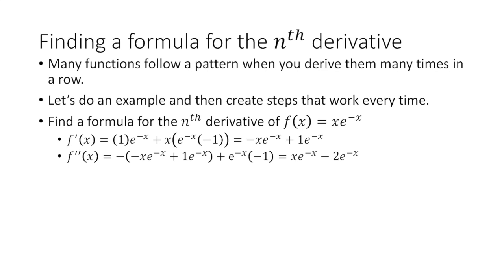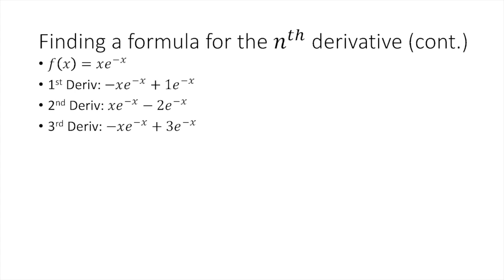I took the derivative again, and I got x times e to the negative x minus two times e to the negative x. And one last time, I got negative x times e to the negative x plus three times e to the negative x. So the first thing I do is rewrite all three of my derivatives and make sure that I'm ordering my terms consistently. In this case, the term that has x times e to the negative x is always the first term, and the term that just has e to the negative x times some number is the second term.